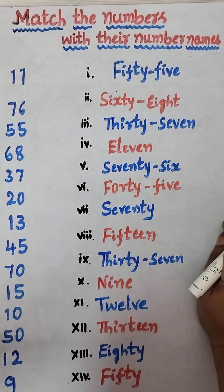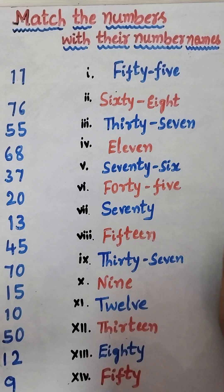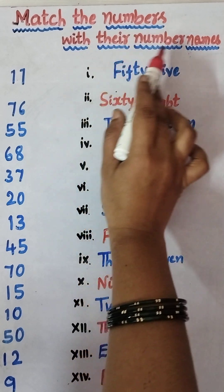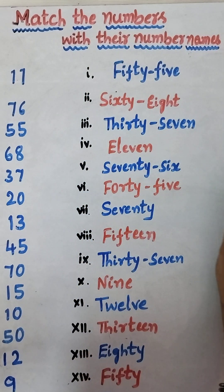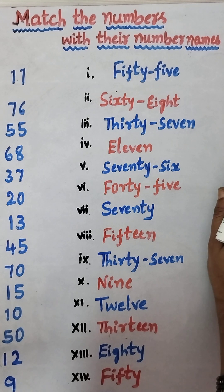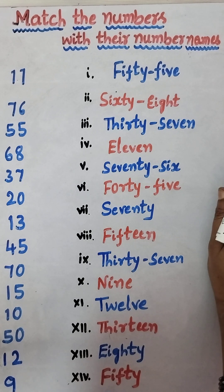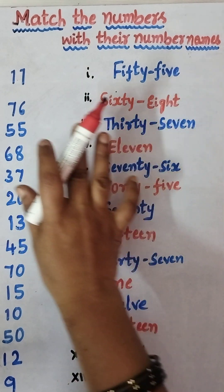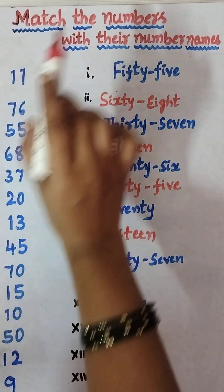Hi children, welcome back to our channel Babes Kids Tutorial. Please subscribe to our channel. Children, today we will learn about matching numbers. So match the numbers with their number names. We already learned how to write number names in English, from 1 to 130. So this is the exercise — we have to match the numbers with their number names.